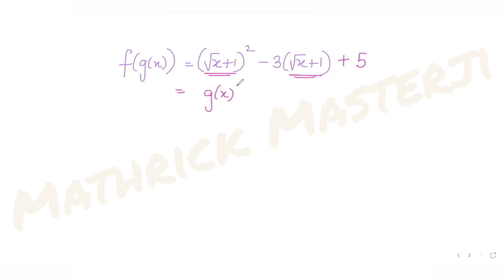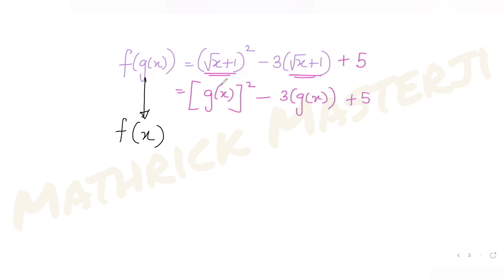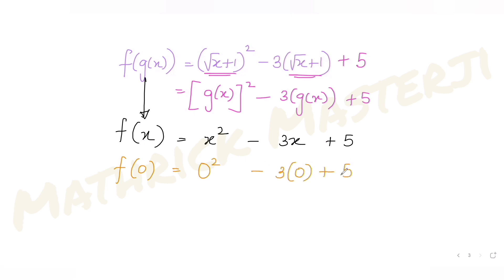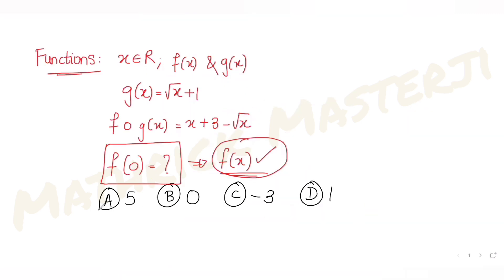Now I can replace √(x+1) with g(x) everywhere, giving f(g(x)) = [g(x)]² - 3·g(x) + 5. Therefore f(x) = x² - 3x + 5. To find f(0), I substitute x = 0: f(0) = 0² - 3(0) + 5 = 5. The value of f(0) is five, which matches option A — so A is the correct answer.